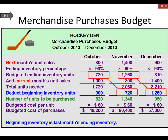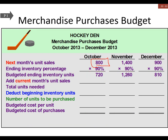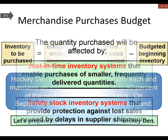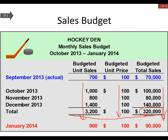So for October, this 800 right here — if we look back at our sales, we'll see that the 800 is actually not October's, it's actually November's. That's what we're plugging in for our purchases — we're plugging in the next month's sales figure, and it flows through from there.